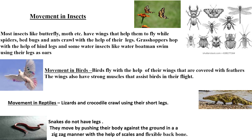Grasshoppers hop with the help of their hind legs. Some water insects like the water boatman swim using their legs as oars. Birds usually fly using a pair of wings, which are actually modified forelimbs. Birds have light bodies and move their wings up and down to push themselves through the air. They also use their two legs to perch on branches and hop on the ground.